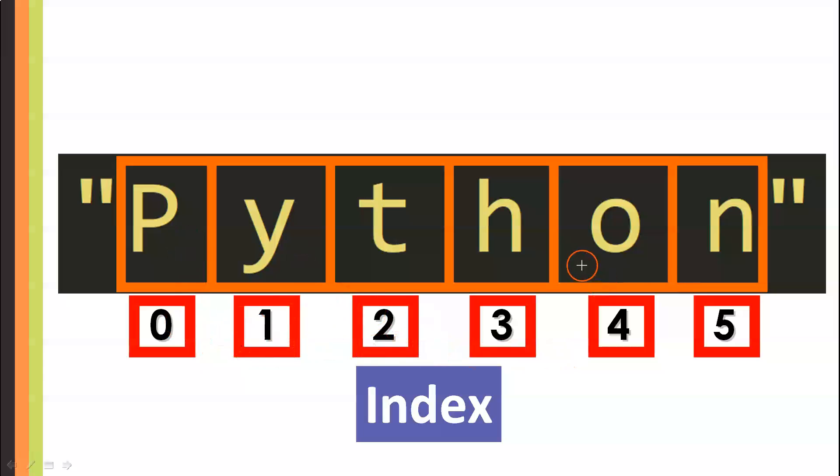For example, we can say that the character O is located at index 4. This is its corresponding index, and we can use this number to access the letter O in the string Python.